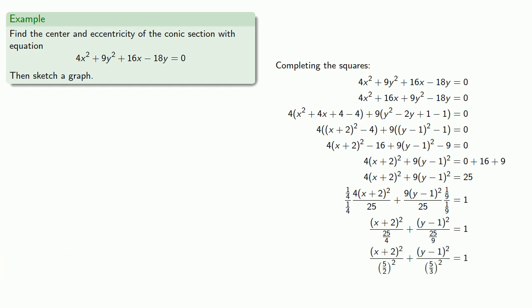And so we see that this equation corresponds to the ellipse (x²/(5/2)²) + (y²/(5/3)²) = 1, translated 2 units to the left and 1 unit upward.